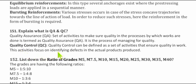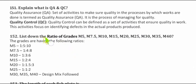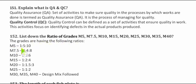Question 152: List the mix ratios for concrete grades M5, M7.5, M10, M15, M20, M25, M30, M35, M40. The ratios are: M5 = 1:5:10, M7.5 = 1:4:8, M10 = 1:3:6, M15 = 1:2:4, M20 = 1:1.5:3, M25 = 1:1:2. For M30 and above, follow design mix.